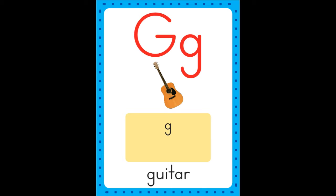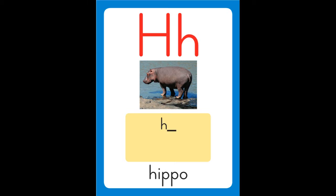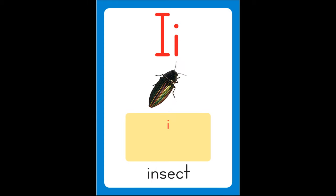G is for guitar, g-g-guitar. H is for hippo, h-h-hippo. I is for insect, i-i-insect.